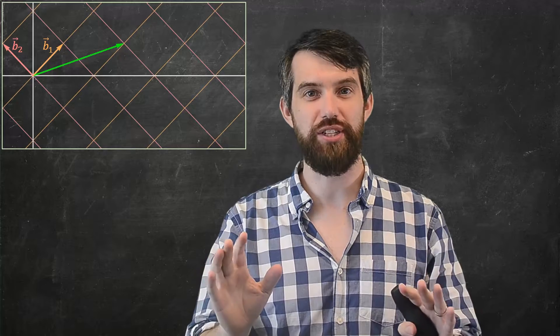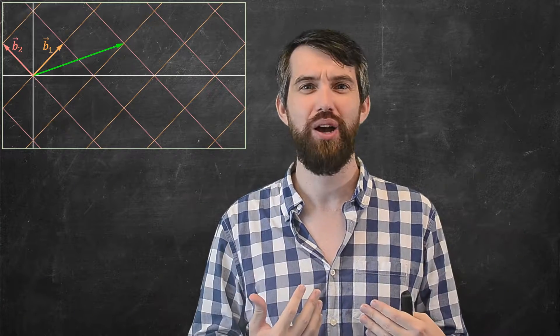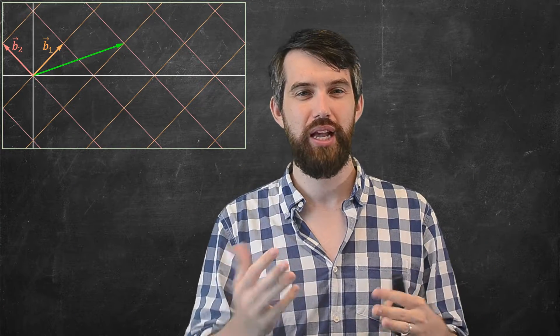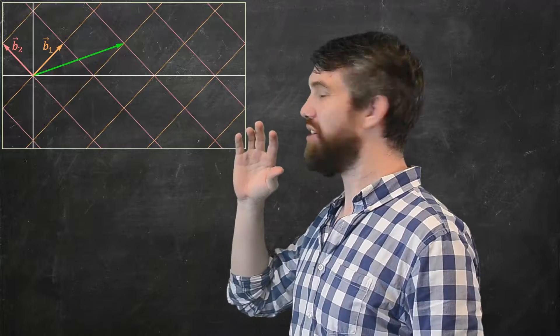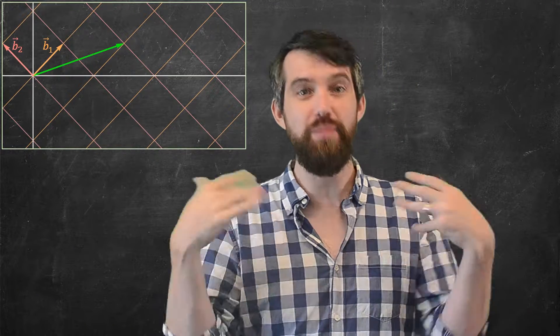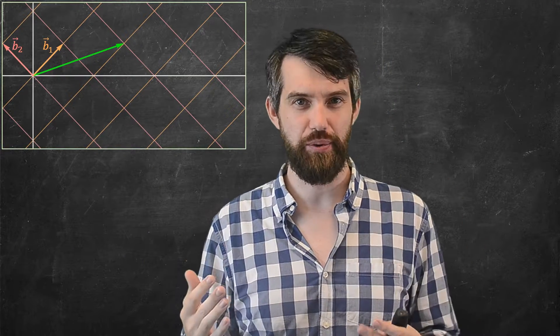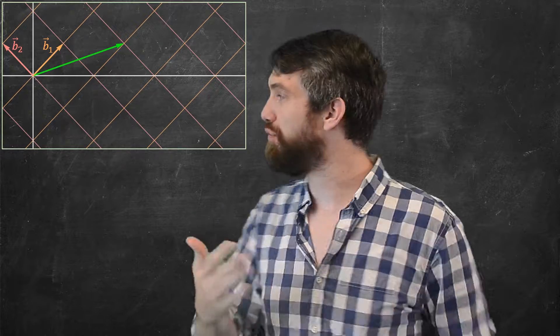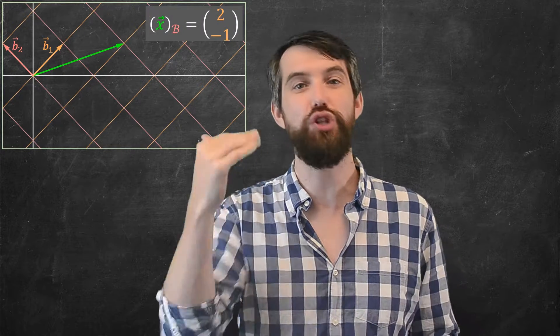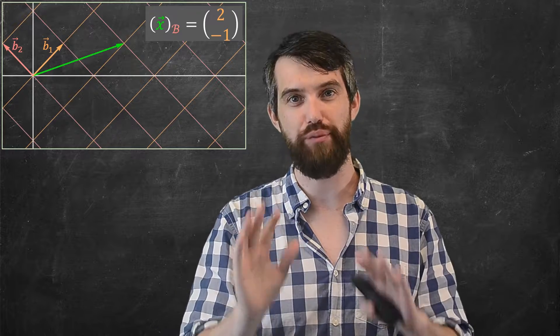I have two different questions about change of basis and what that looks like visually. The first is this. I have here a grid system corresponding to the basis vectors b1 and b2. I can take any vector, for example the x vector, and I can write it in that basis system 2 minus 1 as we've seen before.